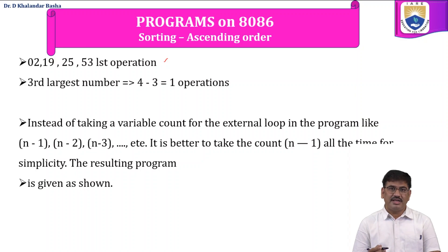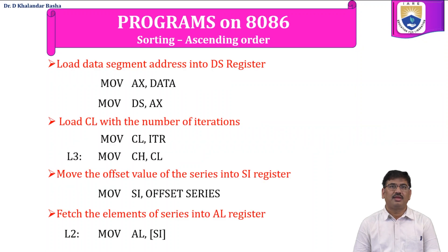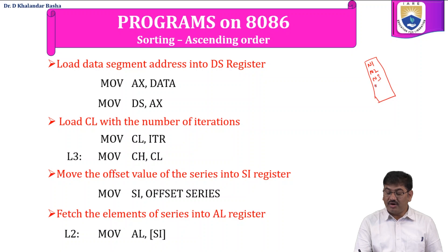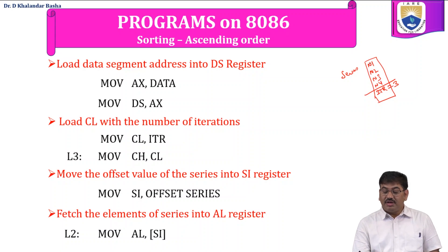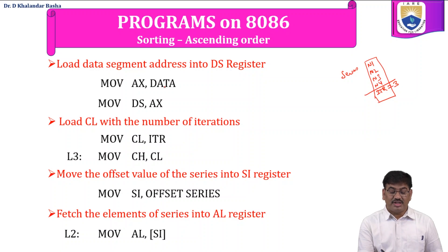Now we will see the step-by-step execution of the ascending order program. The data is stored in memory as N1, N2, N3, N4 under the variable name 'series'. The number of iterations required for four numbers is three, stored in the next memory location. The data segment address assigned by the assembler is loaded into the data segment register. Since immediate data cannot be loaded directly into a segment register, it is first stored in AX, then transferred from AX to DS.